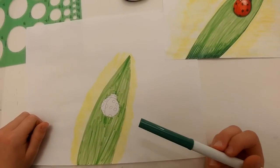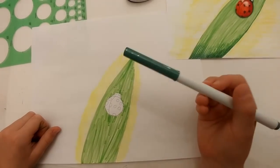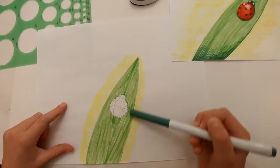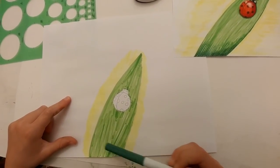To make it more colorful, use dark green to trace one side of the leaf and make lines.